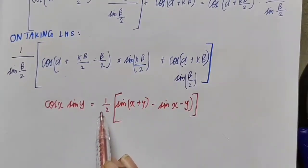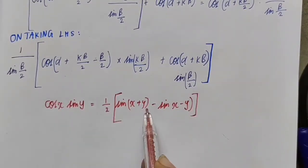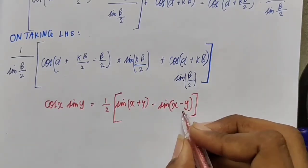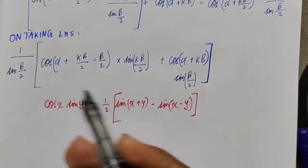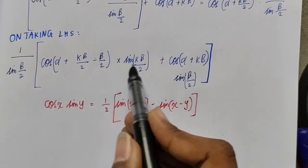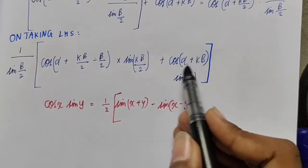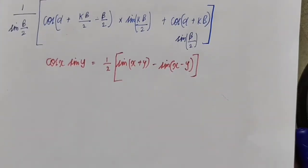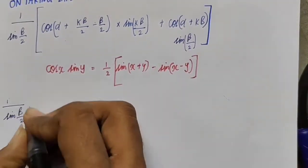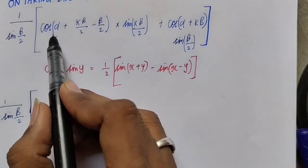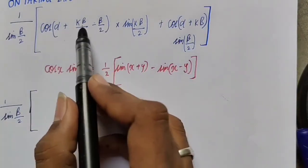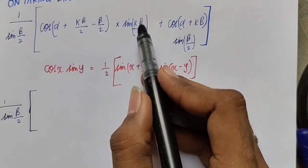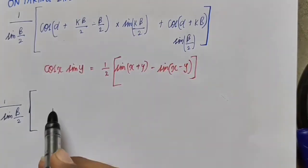We apply the product-to-sum formula: cos x · sin y = (1/2)[sin(x + y) − sin(x − y)]. We identify x as the cosine argument and y as the sine argument, then substitute into the formula.